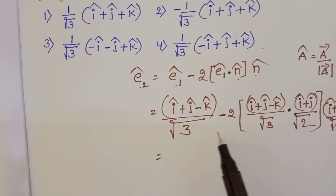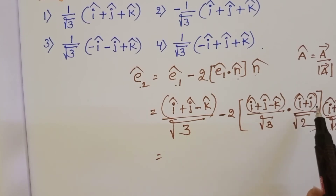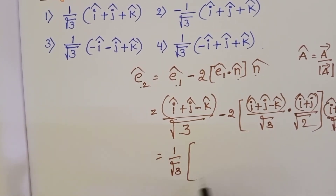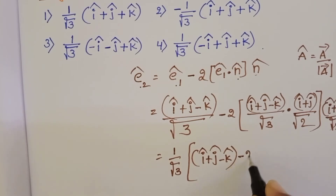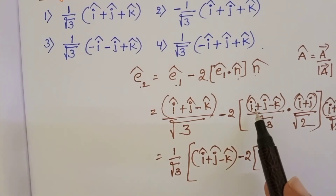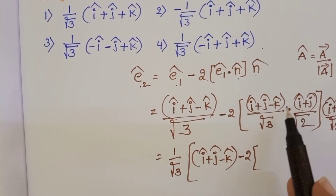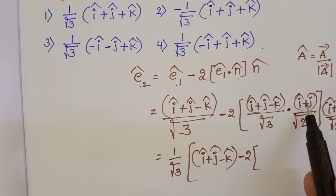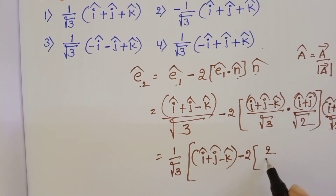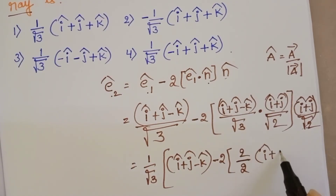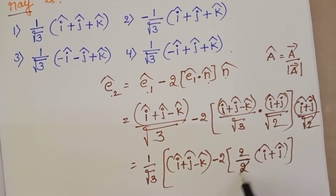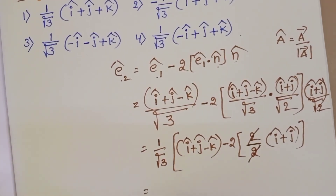Simplifying: the overall factor is 1/√3. So we get (1/√3) × [(î + ĵ - k̂) - 2 × (dot product)]. The dot product: î·î = 1, ĵ·ĵ = 1, so (1×1 + 1×1) = 2. Then 2/√2 × 1/√2 × into n̂ gives factor of 2, which cancels with the 2, leaving 1/√2.